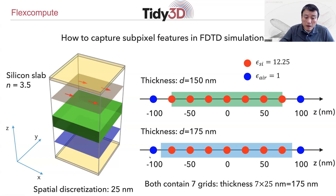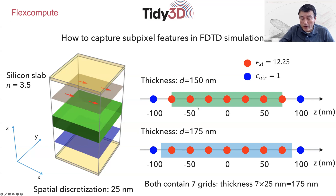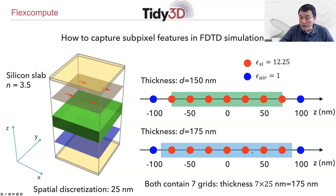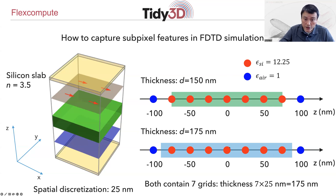Because the discretization is a finite number greater than 0, variations in thickness below the discretization would not be captured. For example, if you intend to simulate a thickness of 150 nanometers, you assign the red dots to silicon. But if you increase the thickness to 175 nanometers, because the change is right at the discretization scale, you will have exactly the same number of grid points assigned to silicon. So in spite of simulating two structures with different thicknesses, they will give identical results — you lose thickness information beyond the accuracy set by the spatial discretization.